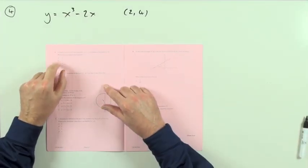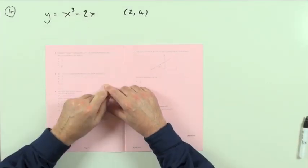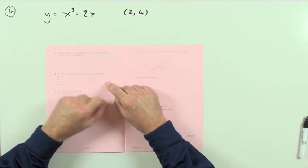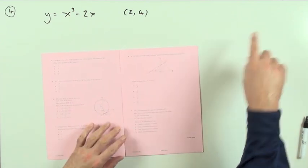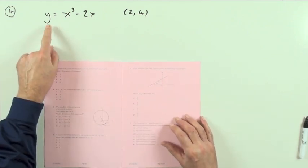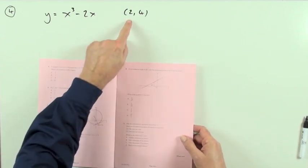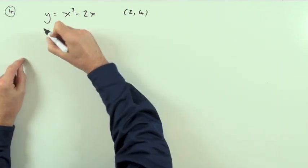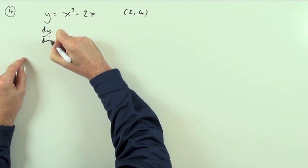So with number four: a tangent to the curve with this equation is drawn at this point on this curve. What's the gradient of that tangent? We don't need a picture of it. It's just simply a case of: here's the coordinate, here's the formula, get the gradient formula and put the x-coordinate into it. Differentiate it: dy/dx, because the gradient will be given by that.